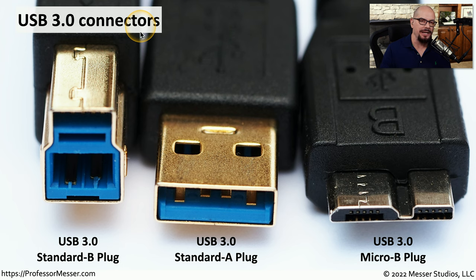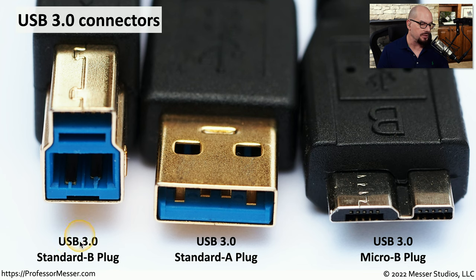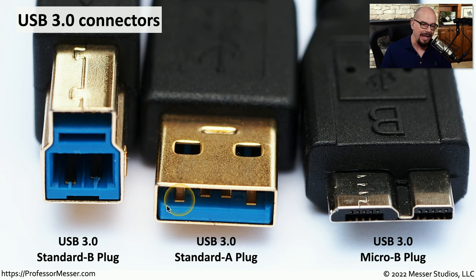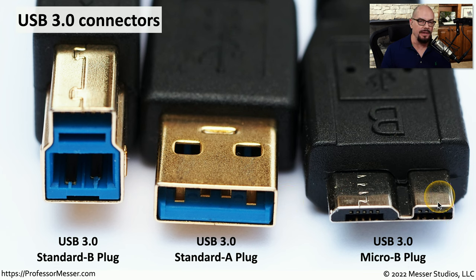USB 3.0 changed the connectors to be able to support higher speeds of throughput. The USB 3.0 standard B plug is much different than the USB 2.0 version, although the standard A plug does look very similar in size and shape. The USB 3.0 micro B plug, though, is very different than the USB 2.0 version.